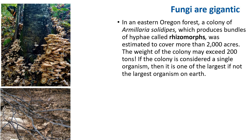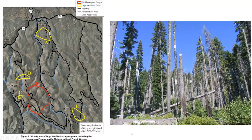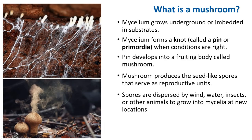This is Armillaria fruiting on a tree, and this is the bundle of hyphae they form called rhizomorphs. This map of Oregon shows the area covered by the fungus, which scientists determined basically slowly devours any tree in its way.